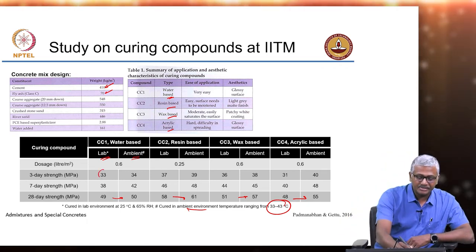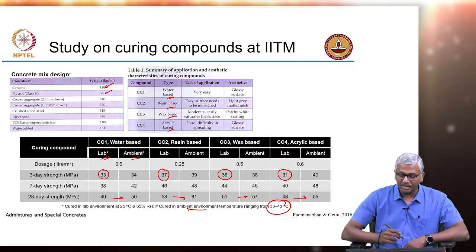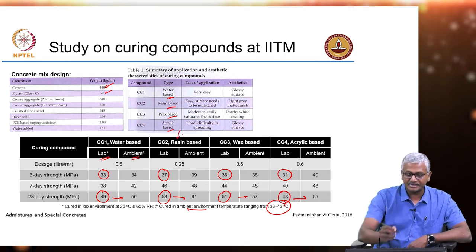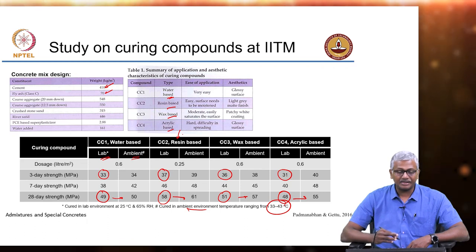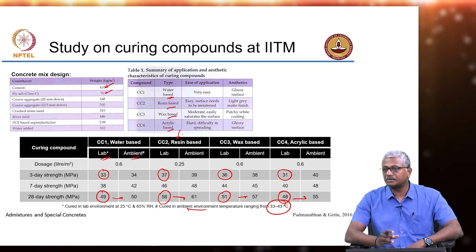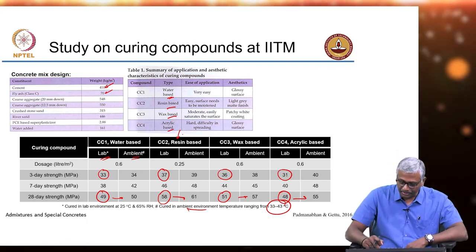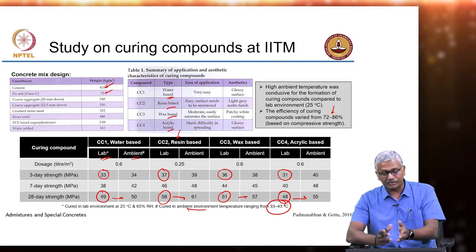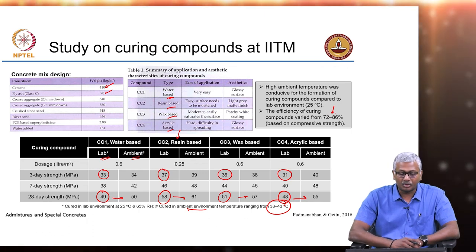Looking at the strengths achieved at 3 days with the 4 different types of curing compounds, there was some variation. At 28 days: 49, 58, 51, and 48 MPa respectively — the resin-based compound certainly led to the most effective water curing equivalent. The efficiency compared to water curing for the resin-based compound used here was nearly 85 to 86 percent. For the other compounds it was lower — for the acrylic-based or water-based curing compounds, efficiency was much lower.